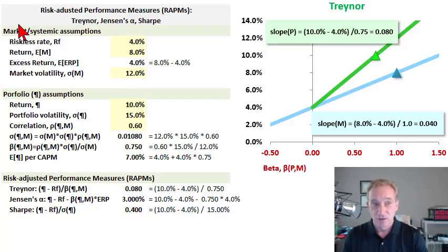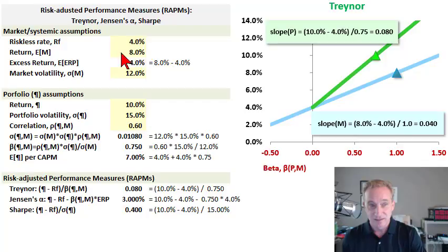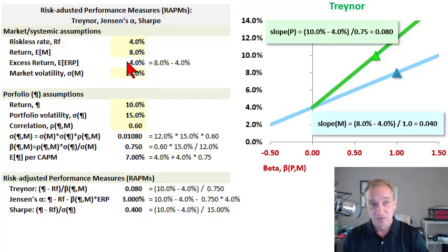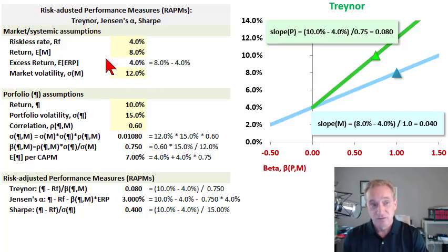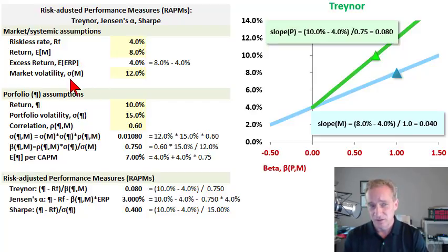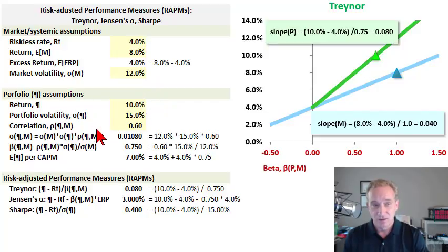In order to do that, I need some assumptions. For the overall market portfolio, I'm assuming a risk-free rate of 4%, and the market portfolio returns 8%. The difference is the excess return—excess usually connotes in excess of the risk-free rate—so that's 4%, which we could also call an equity risk premium. The market's volatility or standard deviation, denoted sigma, is 12%.